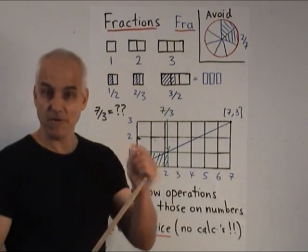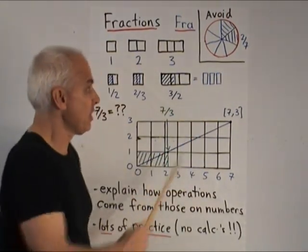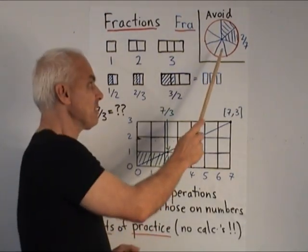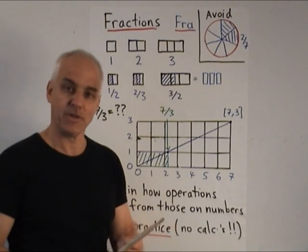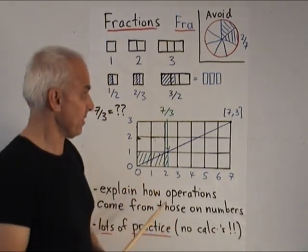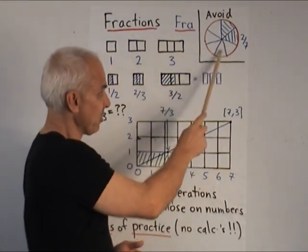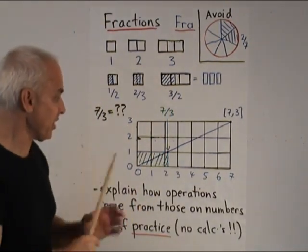I would generally avoid the usual pie type pictures where we divide a circle into equal numbers of pieces. The reason is because it is actually very hard to divide a circle evenly into say 7 pieces. Even theoretically that is a very hard thing to do. And I don't think it really corresponds as well to intuition as a linear representation.